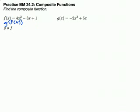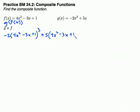So take the function f, which is 4x squared minus 3x plus 1, and plug that into the x for the function g, negative 2x cubed plus 5x. So we will have negative 2 times 4x squared minus 3x plus 1 cubed, plus 5 times 4x squared minus 3x plus 1.